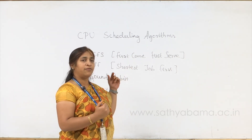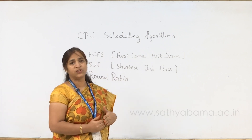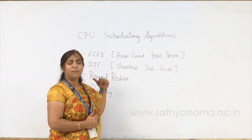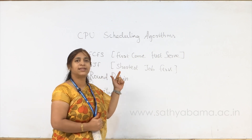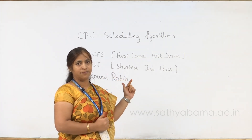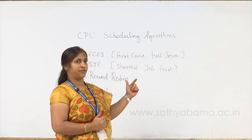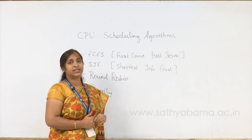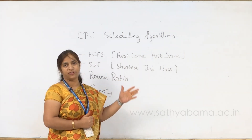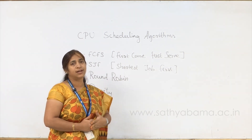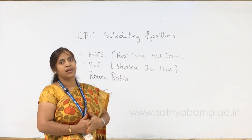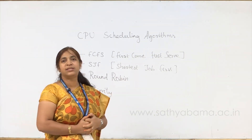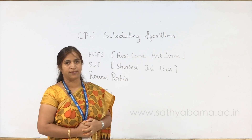There are 4 basic algorithms which we are going to cover now. First, the simplest algorithm is FCFS — first come, first serve. The second algorithm is SJF, which stands for shortest job first. The third algorithm is round robin algorithm. The final algorithm is priority scheduling algorithm.